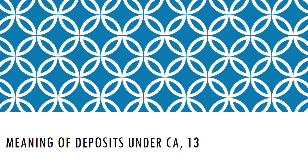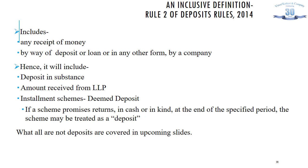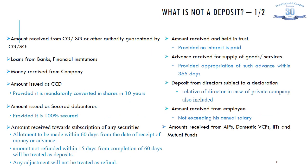Moving on to the concept of deposits under the Companies Act 2013. Chapter 5, consisting of Sections 73-76A and the Companies Acceptance of Deposits Rules 2014, provides the provisions related to acceptance of deposits from the public as well as from members. Rule 2 of the Deposit Rules provides an inclusive definition of the term deposit, which includes any receipt of money by way of deposit or loan or in any other form by a company, including a deposit in substance, any amount received from an LLP, and any installment scheme which promises a return in cash or in kind at the end of a specified period. The definition excludes certain items from the terminology of deposits.